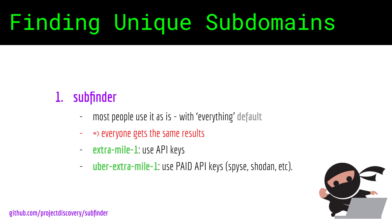You can edit the file config.yaml with the API keys you get from GitHub, Shodan, Spice, Chaos, ReconDev, and others. If you need to pay for a subscription to get the API keys — like for Spice, Shodan, and ReconDev — it's very likely you will uncover subdomains that free tools can't get you.